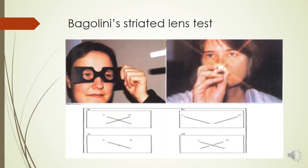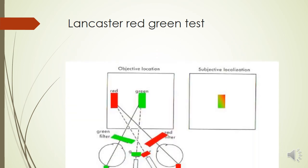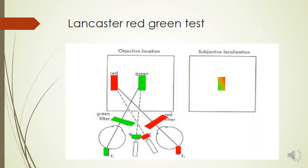In the Bagolini's striated lens test, a pen light is shown to the patient. Because of the Bagolini striation, the patient sees two streaks forming a cross. In the presence of any torsional deviation, tilting of the line is observed. In the Lancaster red-green test, red and green filters are used with two torches — one held by the examiner and one by the patient — at a particular gaze position. Any tilt in the patient's placement reveals the type of cyclophoria or cyclotropia and which eye is affected.